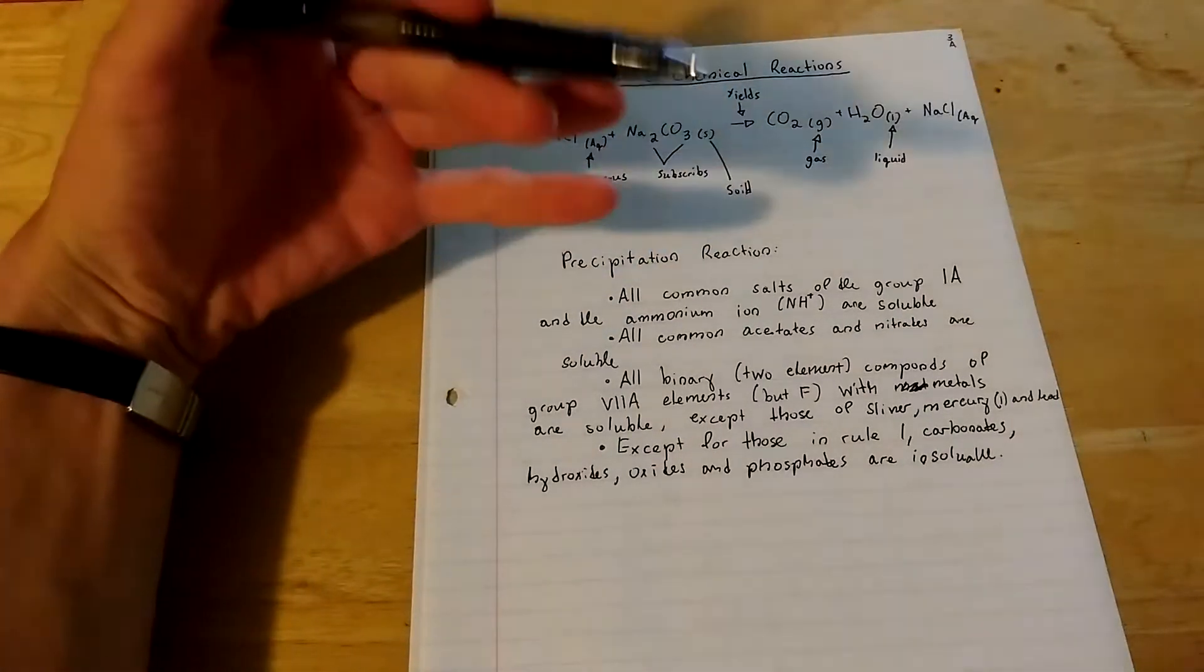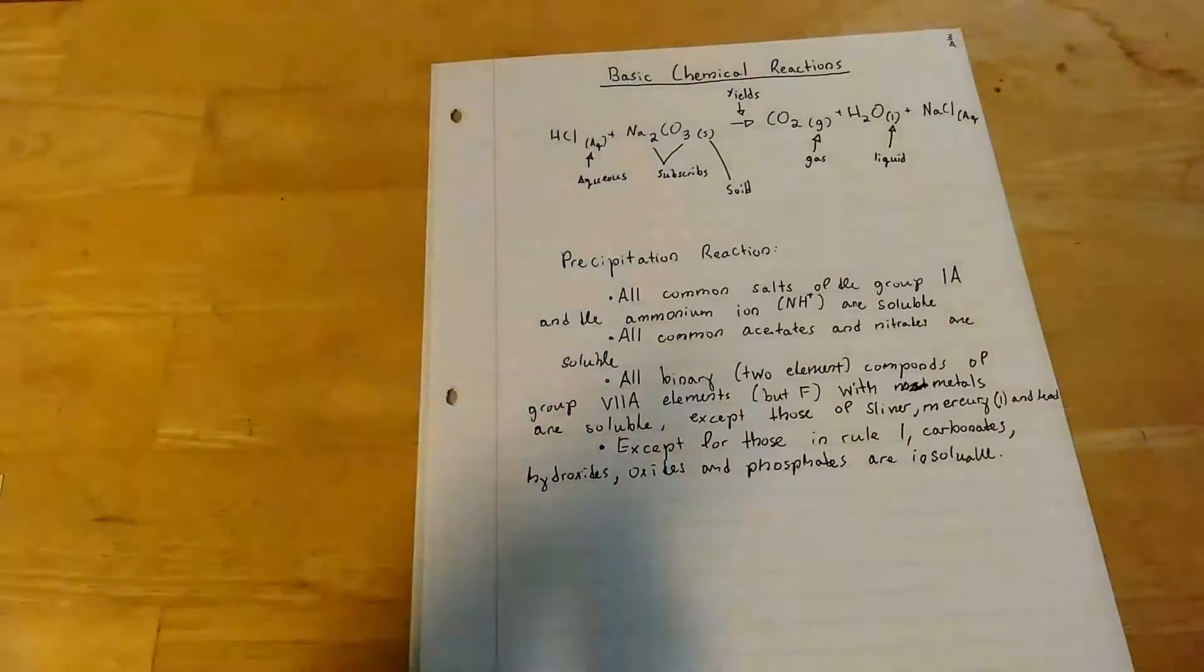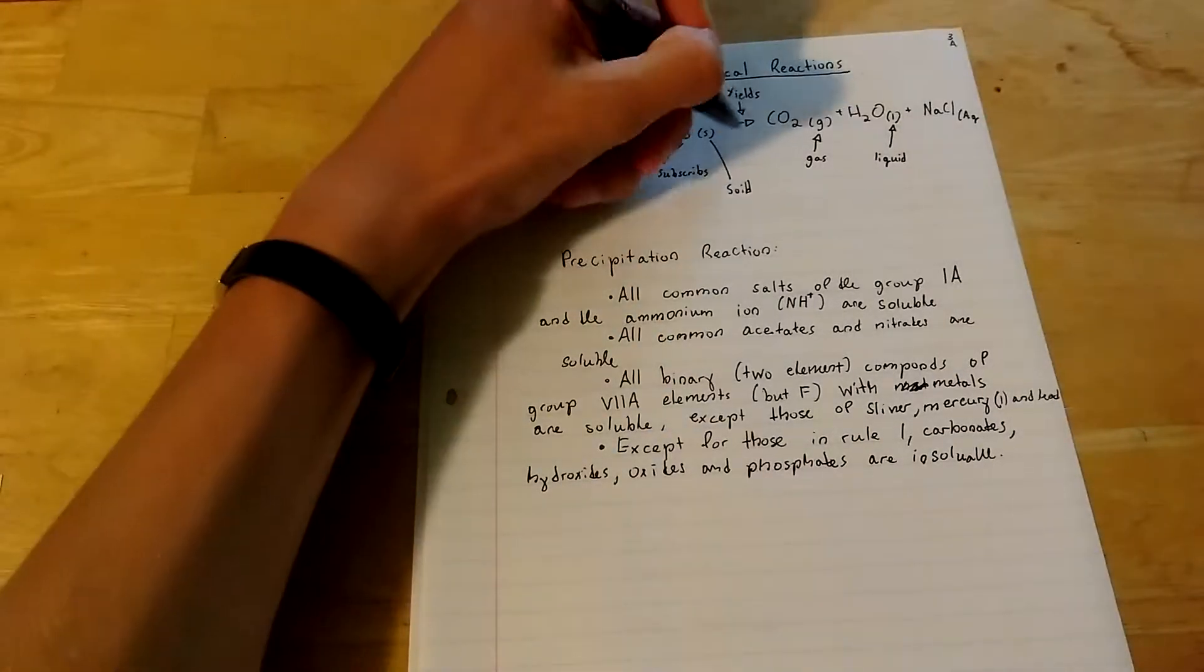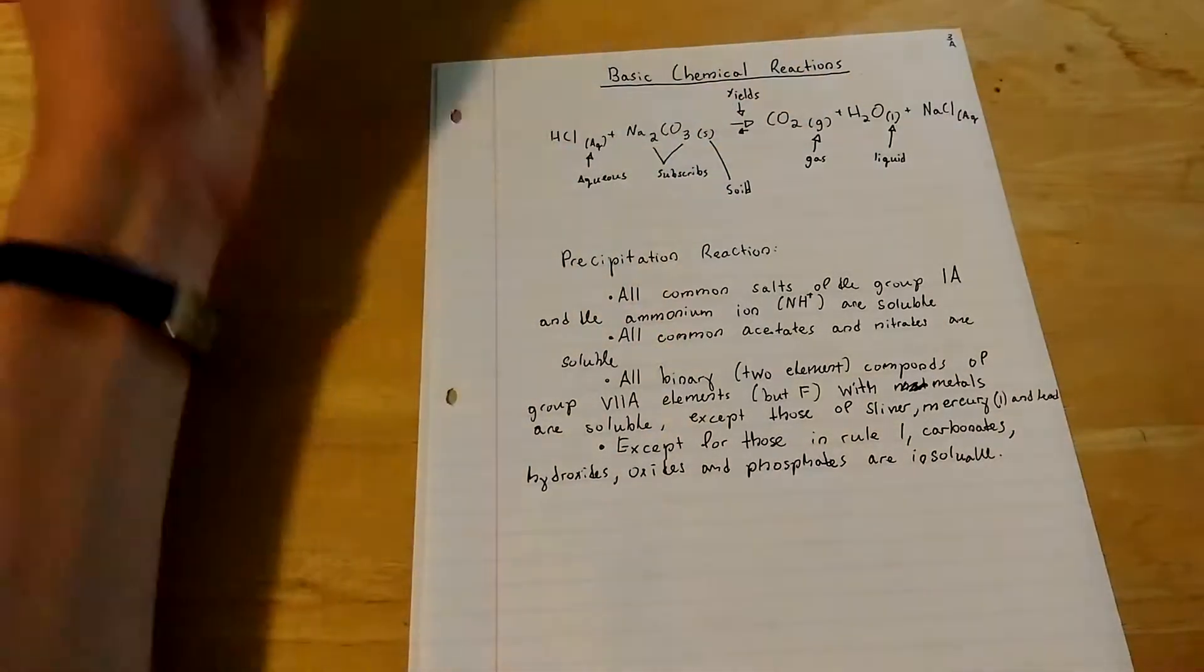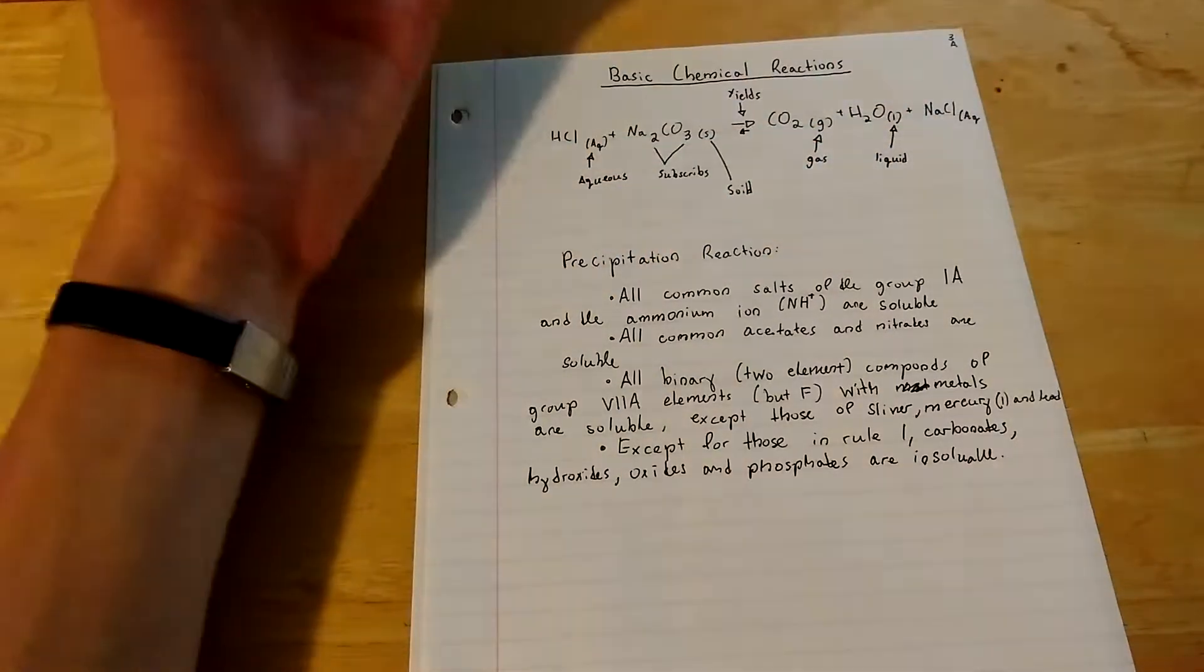And then yields, so it's like equivalent to an equal sign, but don't think about it always as an equal sign because it can go in the opposite direction, like this. G is gas, L is liquid, and that's aqueous.